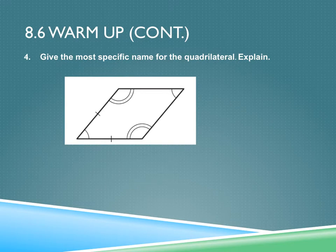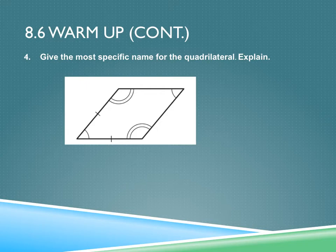Number four: give the most specific name for the quadrilateral and explain. What information do you know about this quadrilateral based on the diagram? Opposite angles are congruent, which makes it a parallelogram. So if I only had that, that's all I'd know. But what else are you given? Two adjacent or consecutive sides are congruent. So now it's a parallelogram with consecutive sides congruent — which makes it a rhombus.